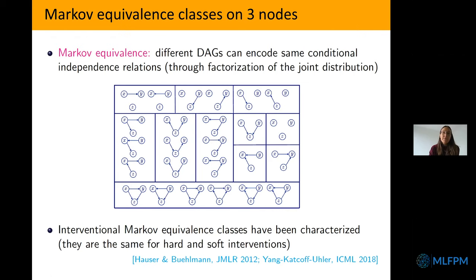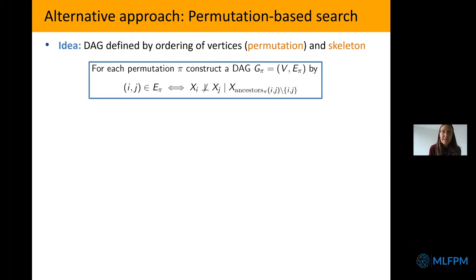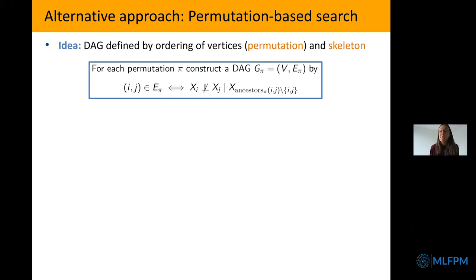Now we know what we can identify in the best case. If we want to come up with algorithms, they need to be able to identify this, so we can talk about consistency. Before, every algorithm was just some heuristic because you don't even know what you can learn in the best case. In this particular paper, an algorithm was proposed for doing this in the interventional setting, but we proved that it's actually not consistent — even with an infinite amount of samples it will not converge to the correct causal Markov equivalence class.